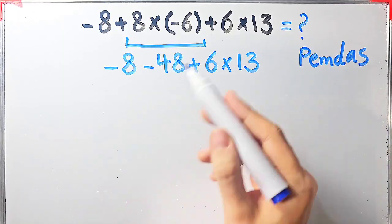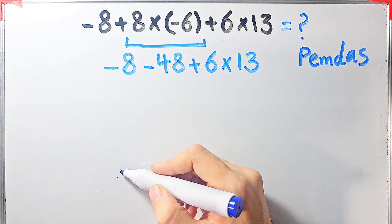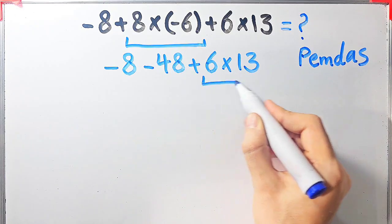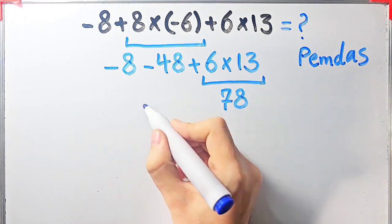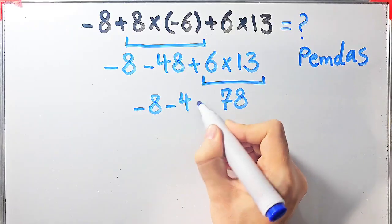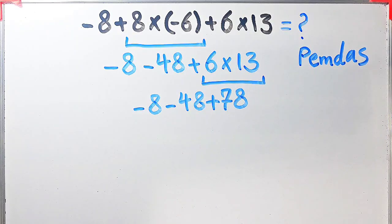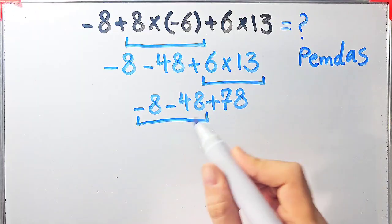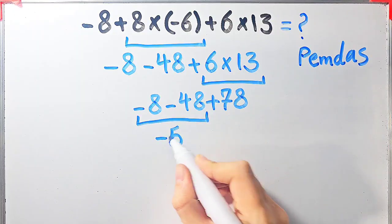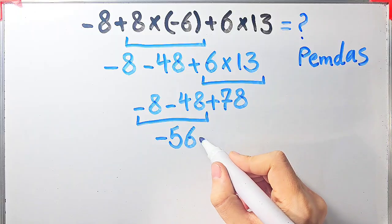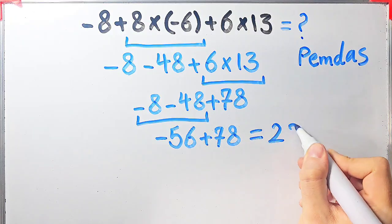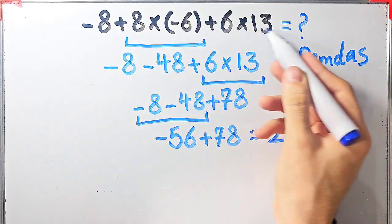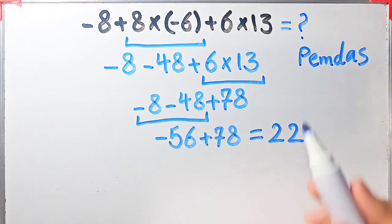Now we have subtraction, addition, and multiplication. In this step we simplify the multiplication first: 6 times 13 equals 78. Now the question is negative 8 minus 48 then plus 78. Negative 8 minus 48 equals negative 56. Now the question is negative 56 plus 78. Negative 56 plus 78 equals 22. The final answer of this question equals 22. Thanks for watching guys, please subscribe to the channel and leave a comment. Goodbye!